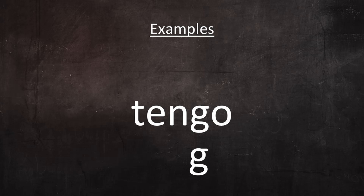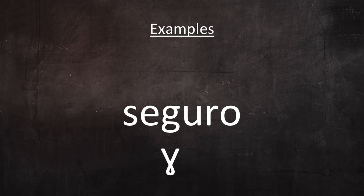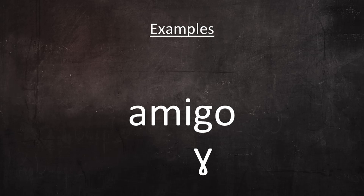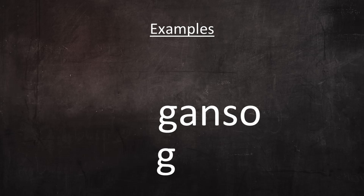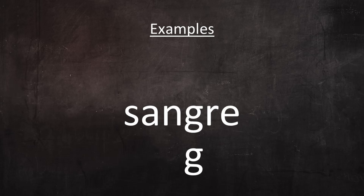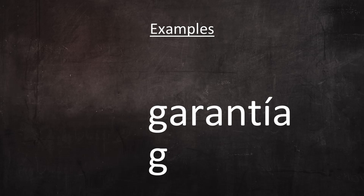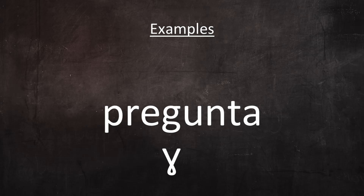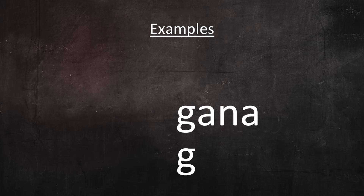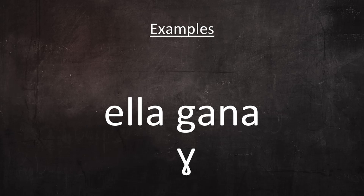'Algo.' 'Tengo.' This G is a stop because it comes after N. 'Seguro.' 'Lugar.' 'Amigo.' 'Ganso.' This G is a stop because it comes at the beginning of an utterance. 'Un ganso.' And this time it's still a stop because it comes after N. 'Sangre.' This G is a stop because it comes after N. 'Garantía.' This G is a stop because it comes at the beginning of an utterance. 'Una garantía.' And the same G in the same word is now an approximant because it comes after a vowel. This G is a stop because it comes at the beginning of an utterance. 'Ella gana.' And the same G in the same word is now an approximant because it comes after a vowel.